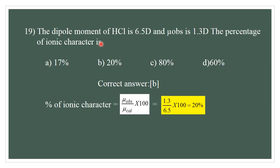Question number 19. The dipole moment of HCl: mu calculated = 6D and mu observed = 1.3D. The percentage of ionic character equals mu observed divided by mu calculated, multiplied by 100, which equals 20%. The correct answer is 20%.